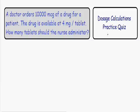Welcome to practice question number one. We're going over dosage calculations. In this problem, a doctor orders 10,000 micrograms of a drug for a patient. The drug is available at 4 milligrams per tablet. The question is: how many tablets should the nurse administer?